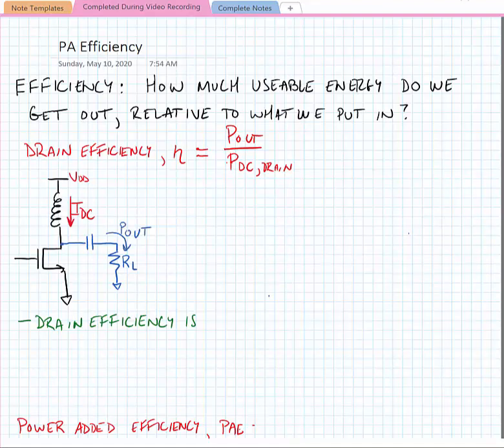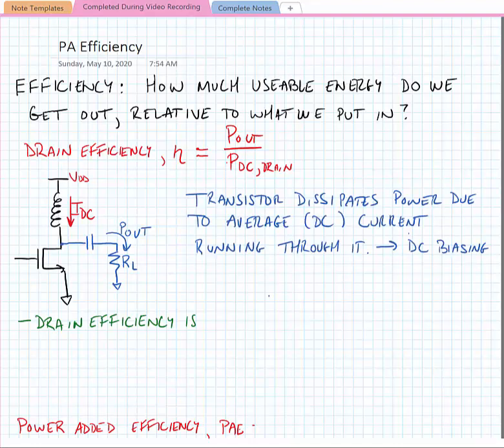So if we have a simple power amplifier like the one drawn, we have some DC current that's flowing through the transistor, and we have some average output power that's being delivered to a load termination. In this case, the transistor is dissipating power due to the average or DC current that runs through it due to DC biasing.